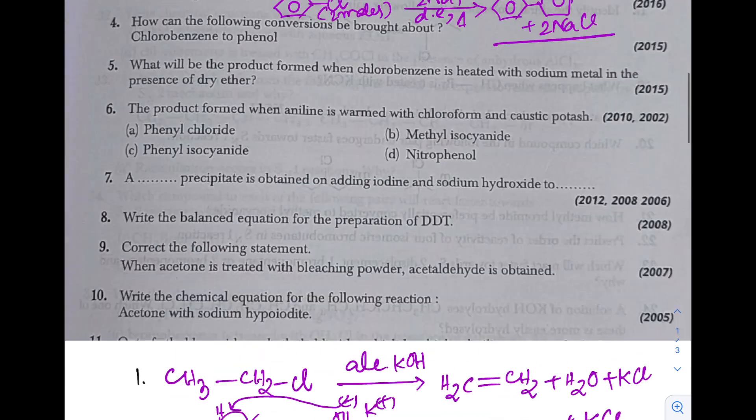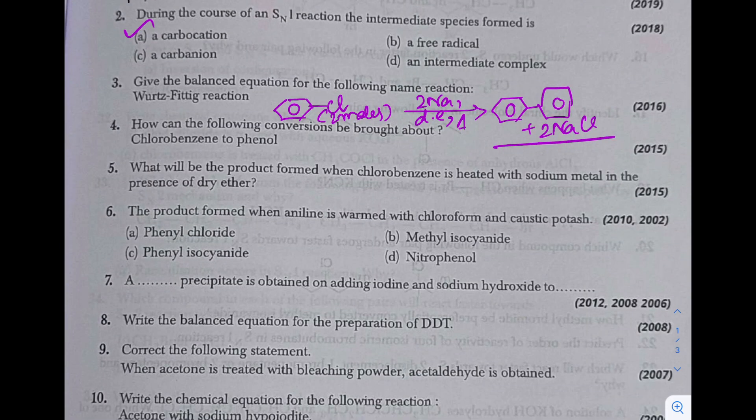Question 5: What will be the product formed when chlorobenzene is treated with sodium metal in presence of dry ether? This is the same question - Wurtz-Fittig. What will be the product? Chlorobenzene when reacts with sodium in presence of dry ether, we will get biphenyl.